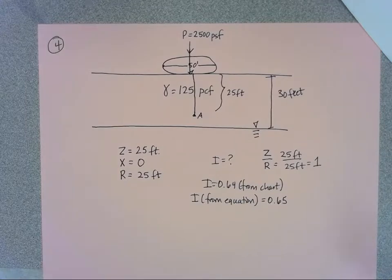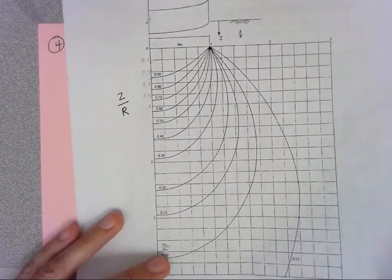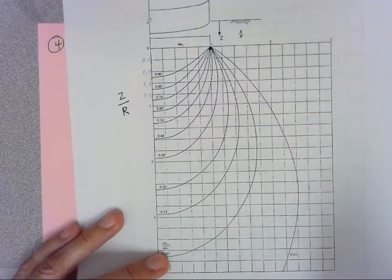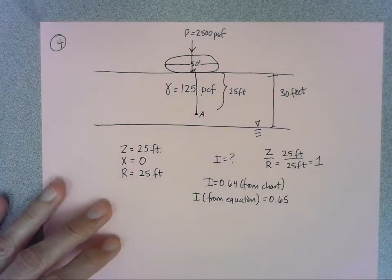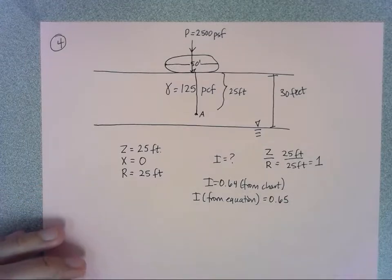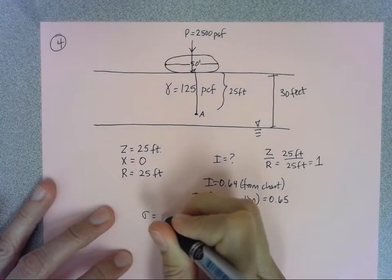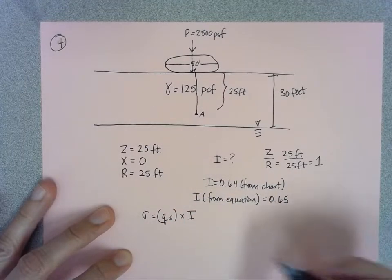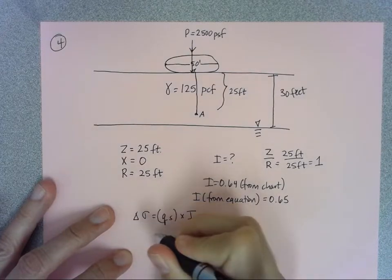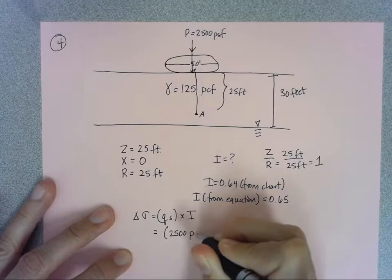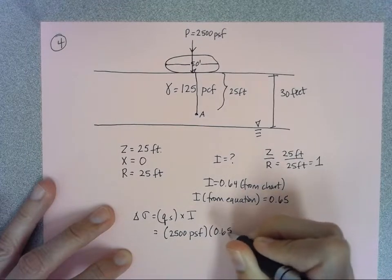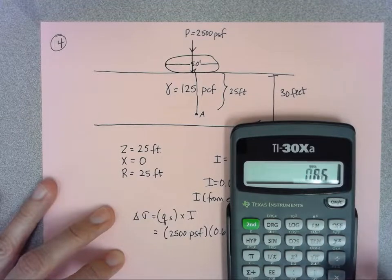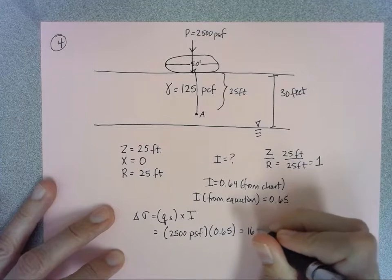So I got 0.64 the other way, 0.65 from the equation. Really either way is fine, if you got 0.63 I would accept that too. The big thing I'm looking for is that you see it's between 0.6 and 0.7. Either one you want to use, I'll go ahead and use the 0.65. My delta sigma is going to be my q sub s times I. My q sub s in this case is 2,500 pounds per square foot, I'm going to use that 0.65, so I have 2,500 times 0.65 and that's 1625 pounds per square feet.